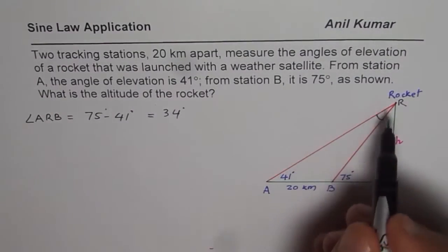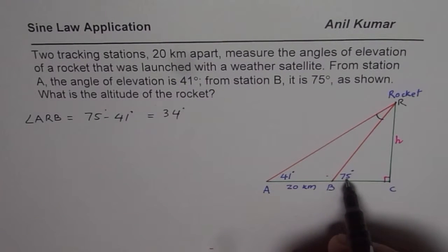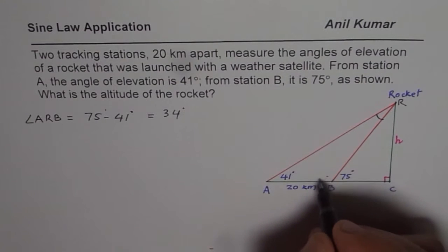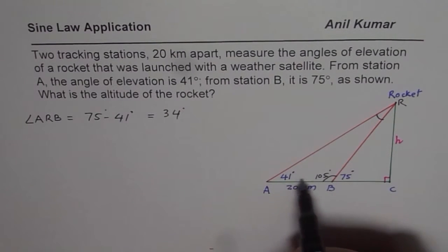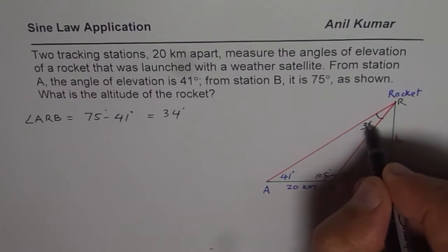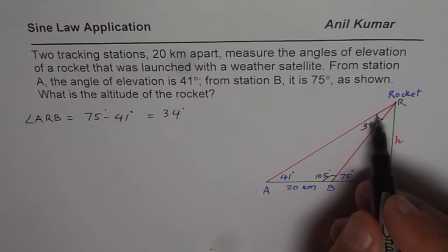Now of course you can also find this angle by first finding that angle, which is 180 minus 75. That is 105. Once you know this is 105, you can do 180 minus sum of these two to get 34, or as I did, you can use exterior angle to find the given angle R.